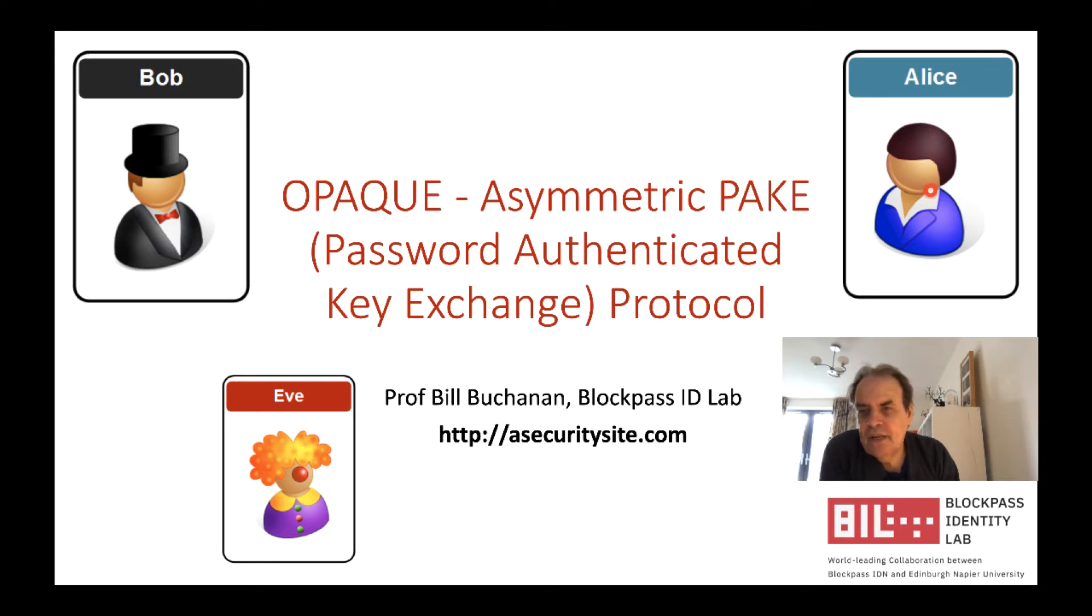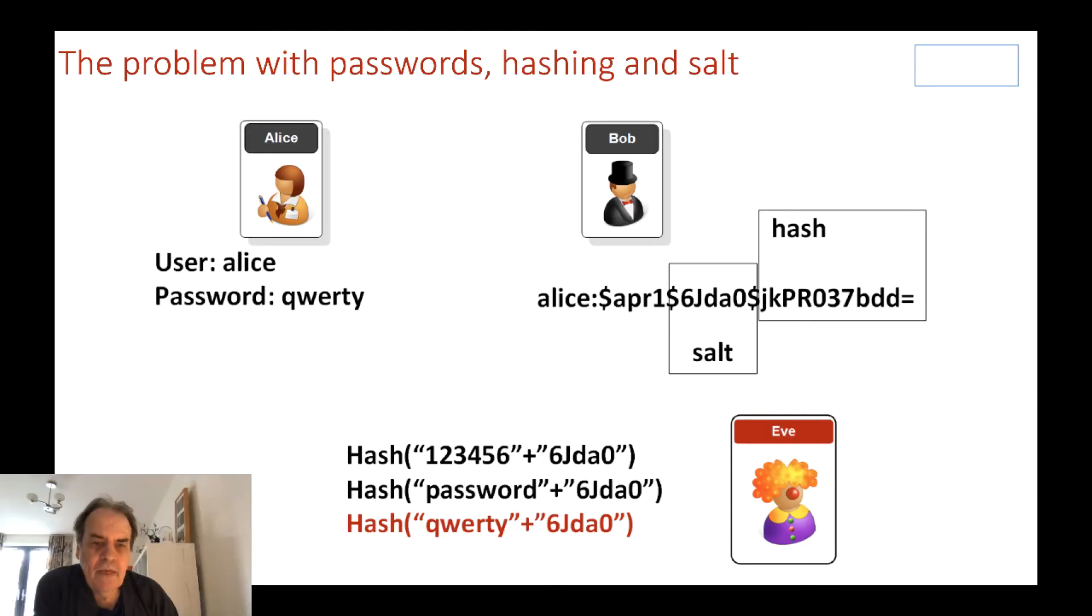Both Bob and Alice identify themselves correctly without either of them revealing their secret information. So Alice may have a secret identifier for Bob, and Bob may have a secret password. They do some sort of oblivious transfer of those details and end up with the same key. This overcomes the complexity of PKI where both would have to have public and private keys.